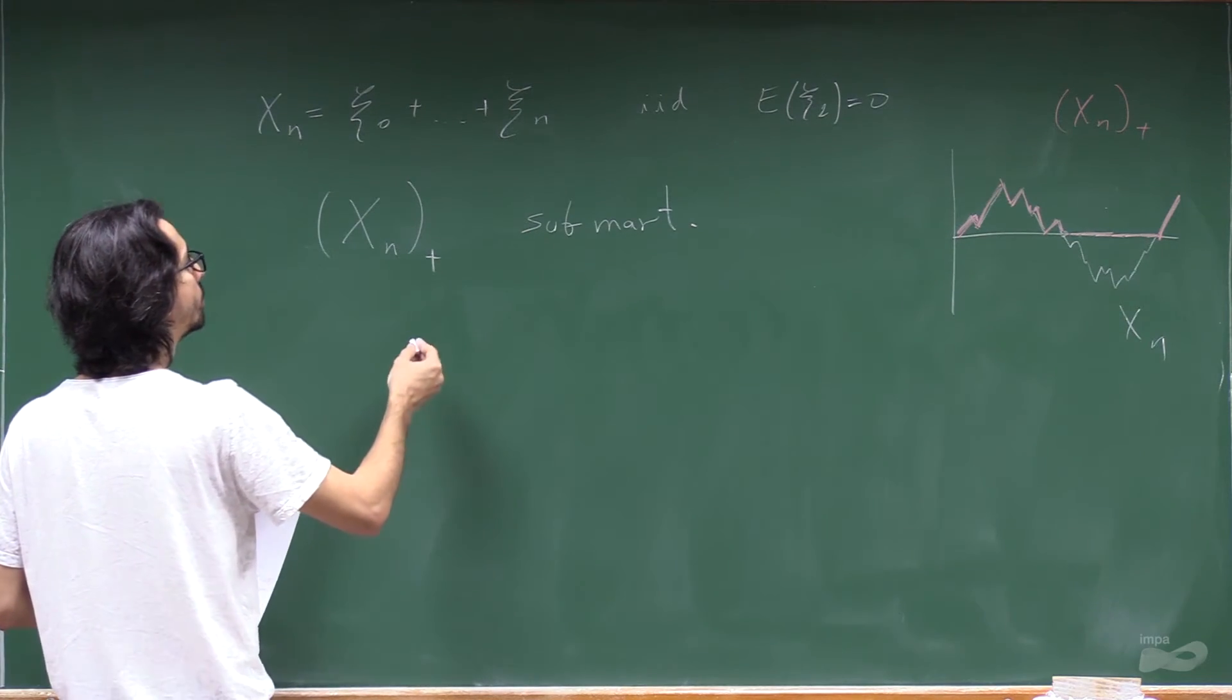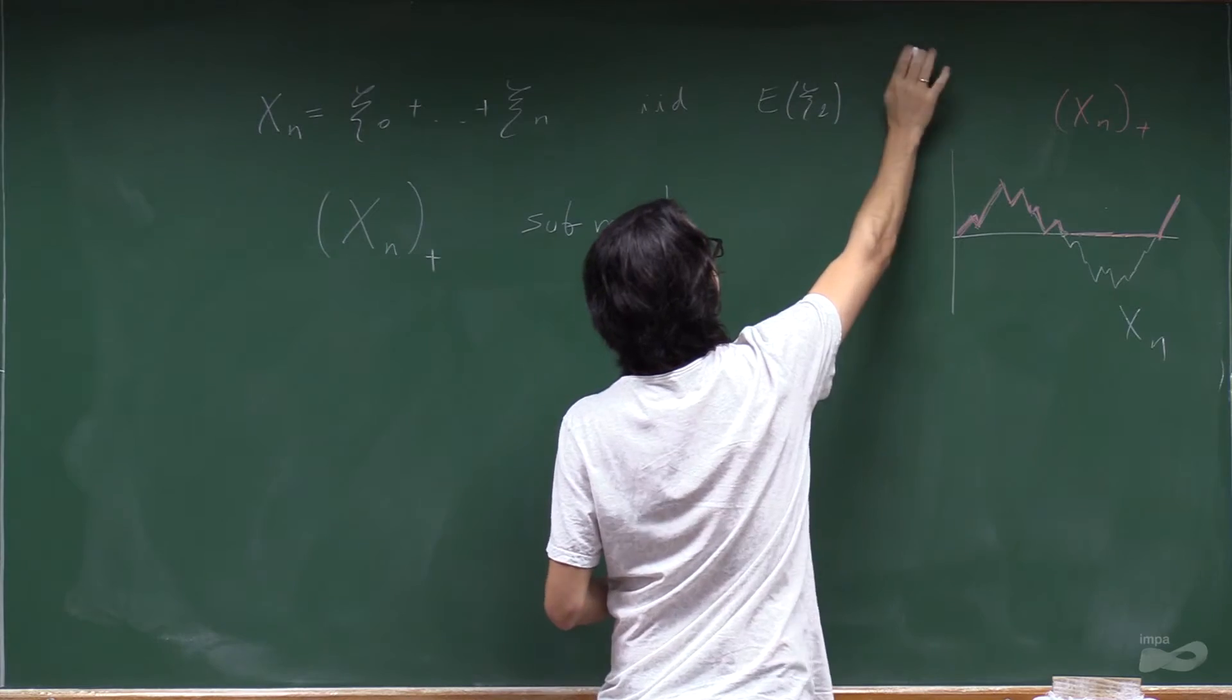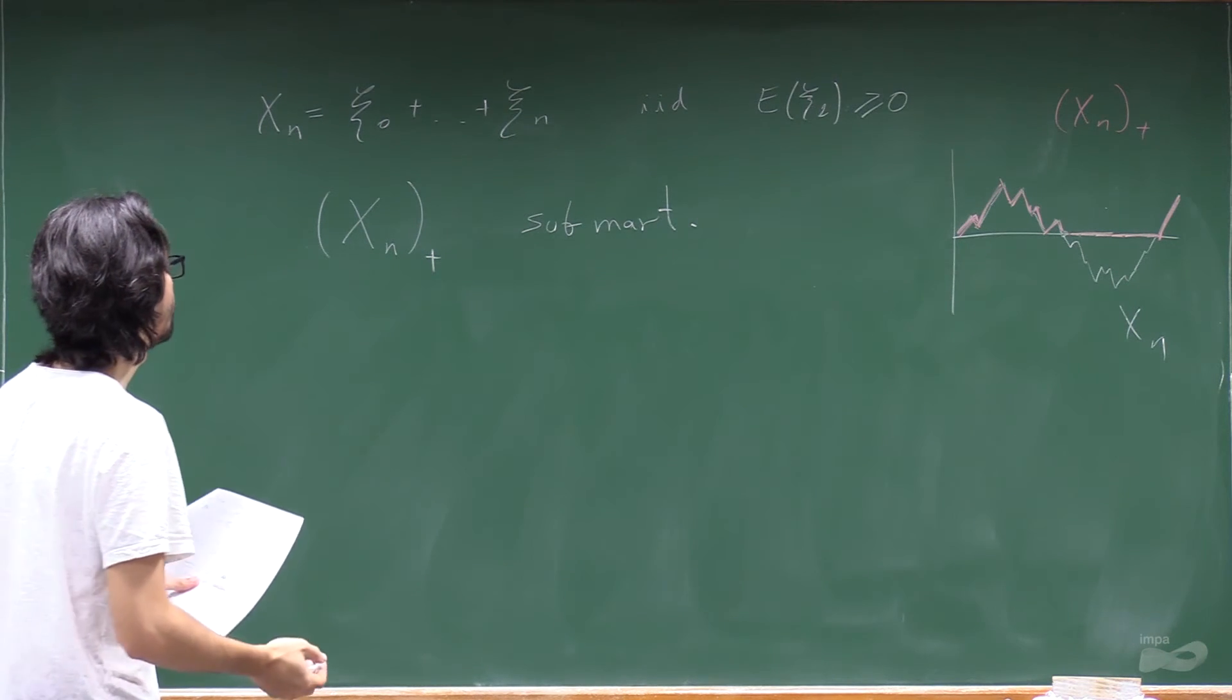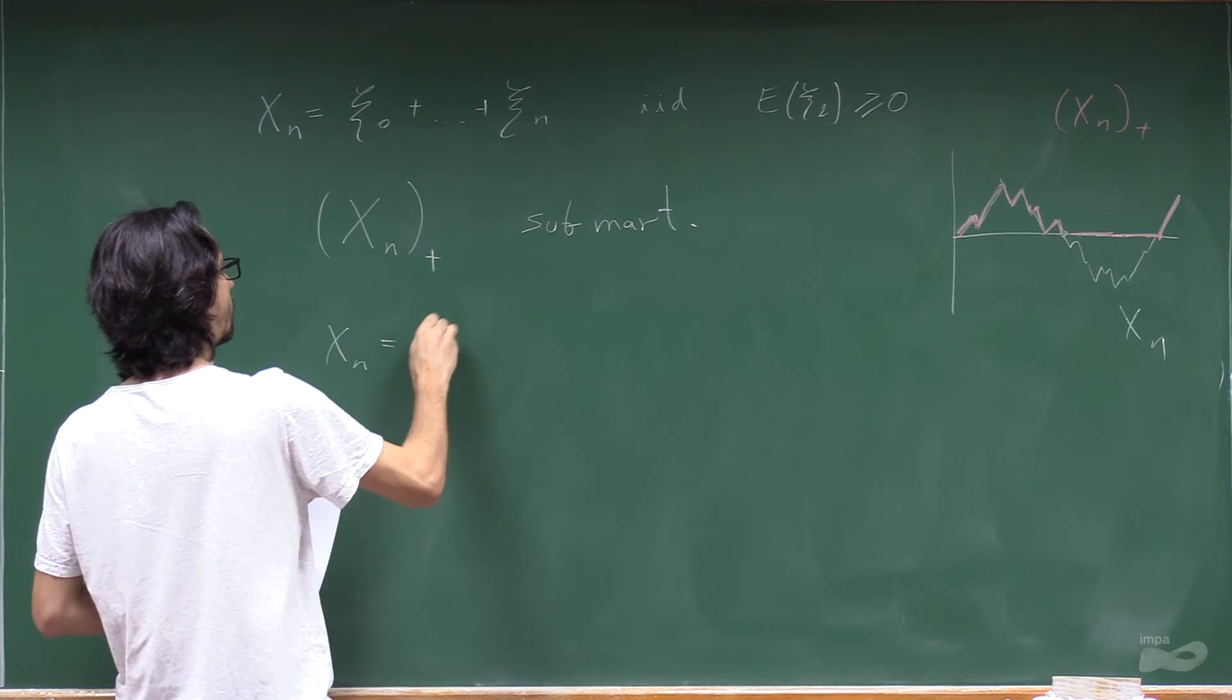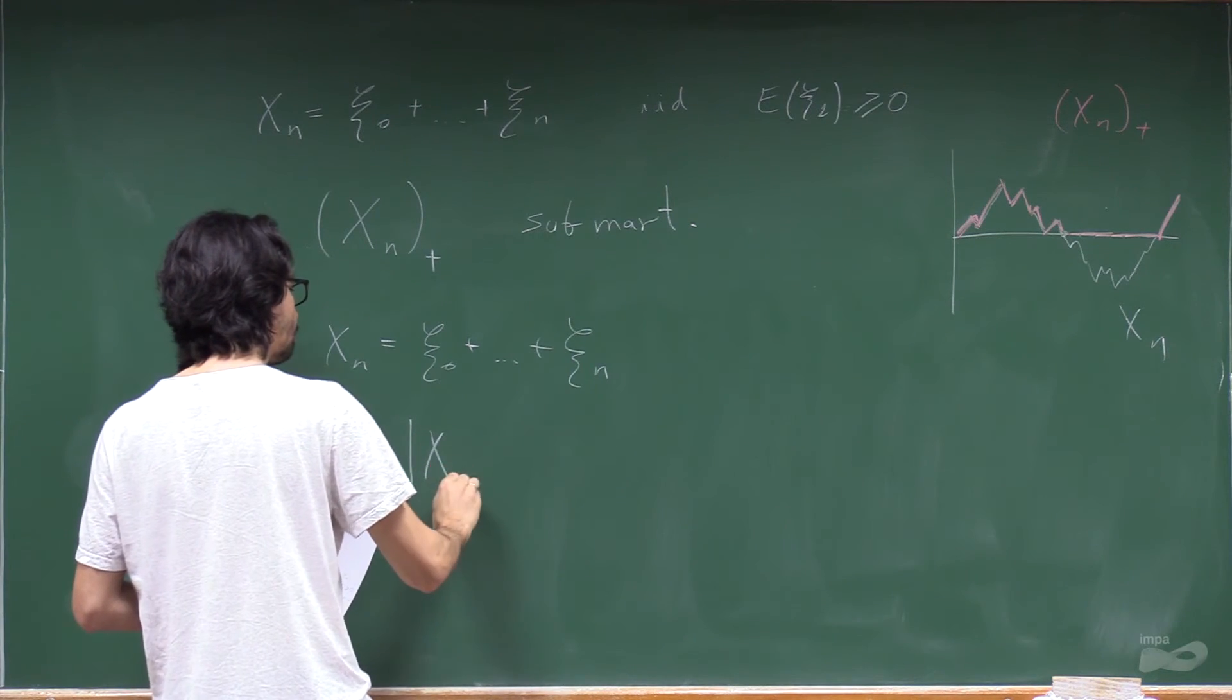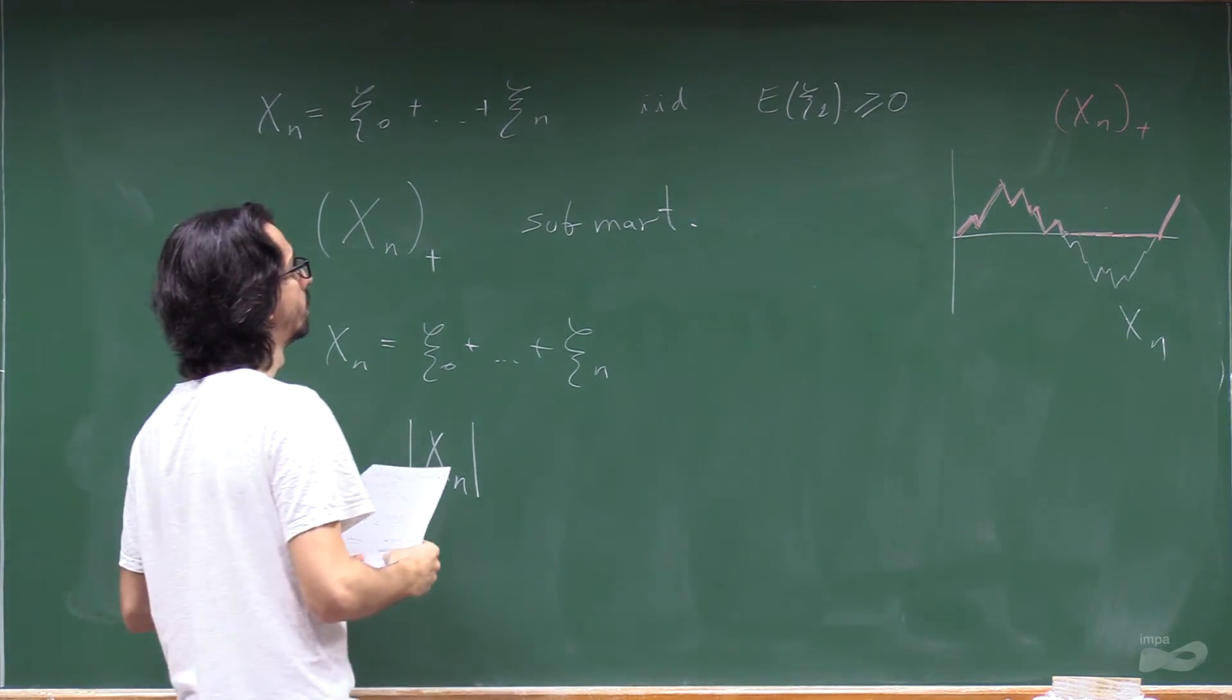The same is true if this was a sub-martingale because of the second theorem. Now, for example, if you want, instead of taking the positive part, you want to take the absolute value of x, then you need a martingale.